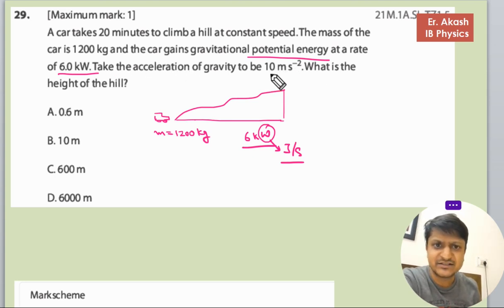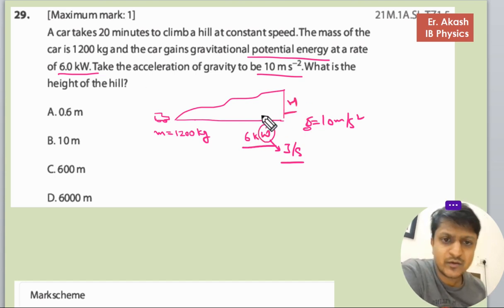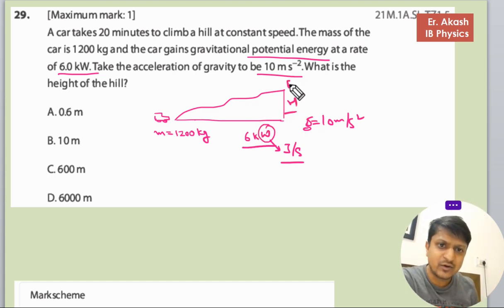Take the acceleration of gravity - g is given as 10 m/s². What is the height? First, we have to calculate the potential energy at this point. We know it takes 20 minutes to reach this, so the total seconds is 20 × 60 seconds.